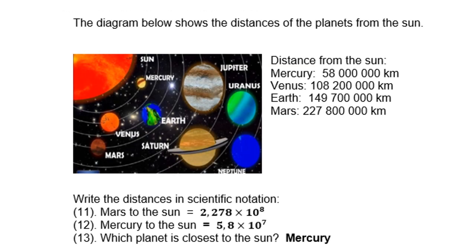The diagram below shows the distances of the planets from the sun — Mercury is 58 million kilometres from the sun, then Venus, Earth, and Mars each have their own distance. You must write the distance in scientific notation from Mars to the sun. Looking at Mars to the sun, it is 2.278 times 10 to the power of 8. Mars to Mercury is 5.8 times 10 to the power of 7. And the planet closest to the sun is obviously Mercury.